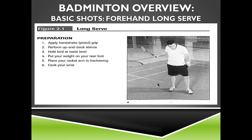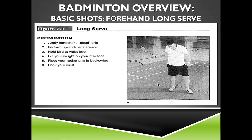For the long serve, the player is positioned farther back from the short line. Use a handshake grip with an up-and-back stance. The birdie is held at waist level, weight starting on the rear foot and progressing to the front foot as you swing forward. Cock the wrist back on the backswing, then shift weight from back to front foot at contact. Contact the shuttle around knee level and hit the birdie high and deep, following through with the racket up across the front of your body while rolling your hips and shoulders forward.